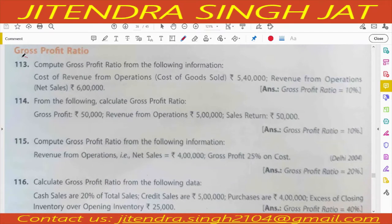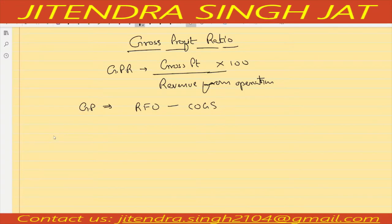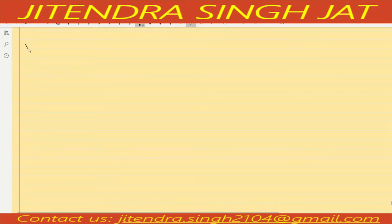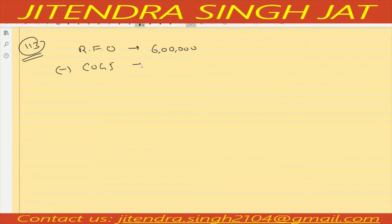Question number 113: Compute gross profit ratio from the following information. Cost of goods sold is given as five lakh forty thousand and revenue from operations is given as six lakh. When we subtract cost of goods sold from RFO, we get gross profit — which is sixty thousand.